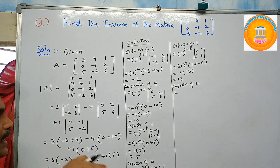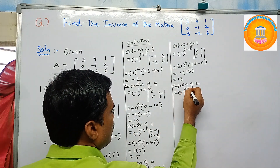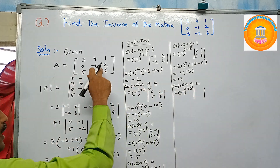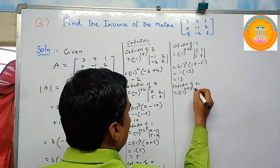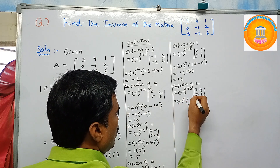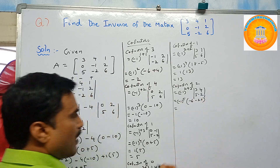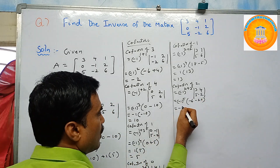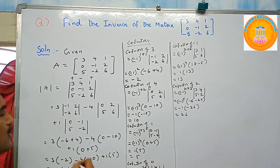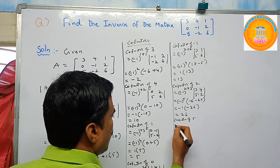Cofactor of two (second row, third column): i equals two, j equals three. Minus one to the power two plus three equals five. The minor is the determinant of three, four, five, minus two, which equals three times minus two minus four times five equals minus six minus twenty equals minus twenty-six. Since power five is odd, minus one times minus twenty-six gives cofactor of two equals plus twenty-six.